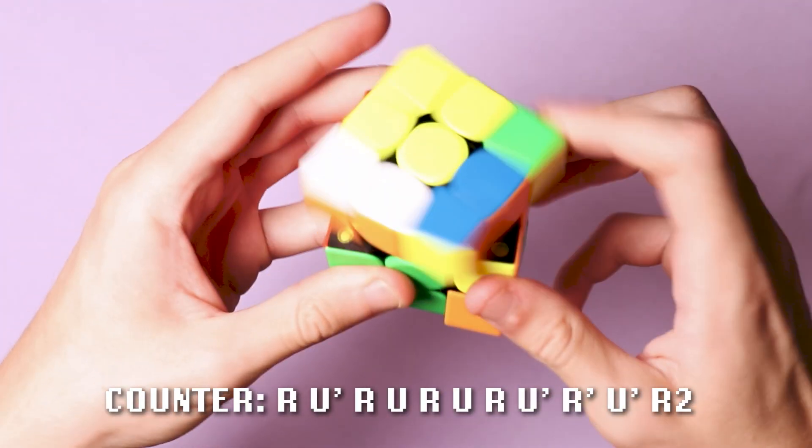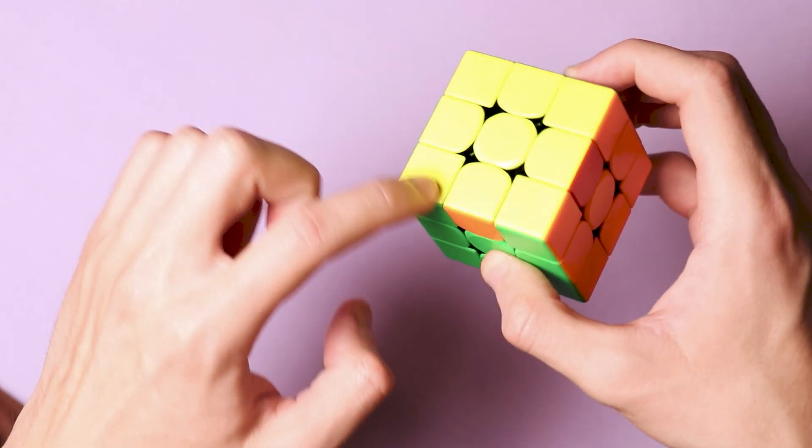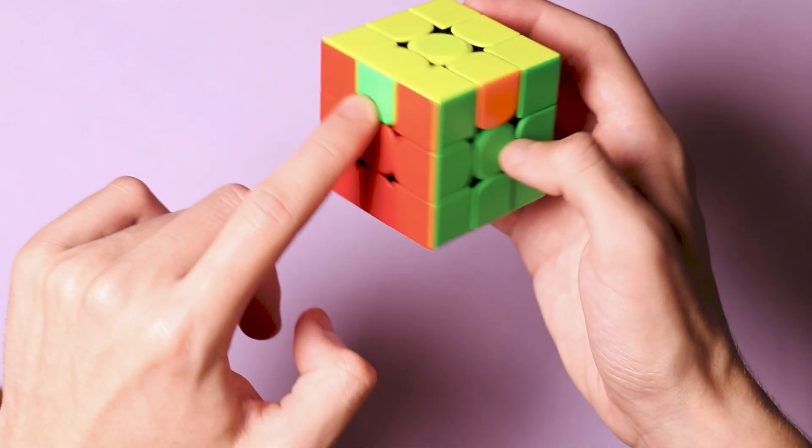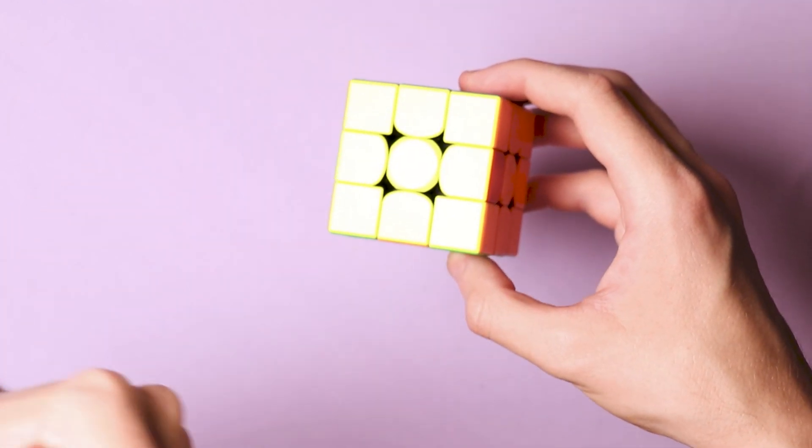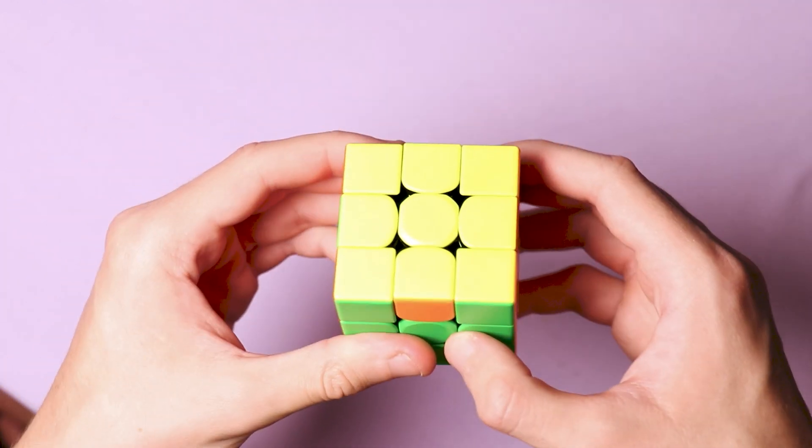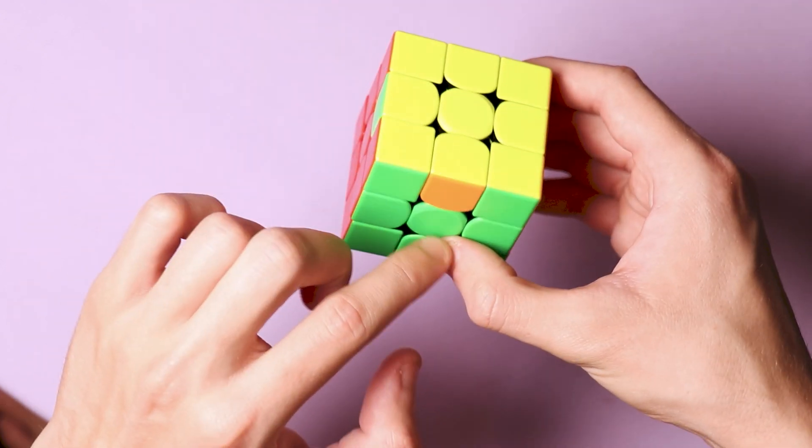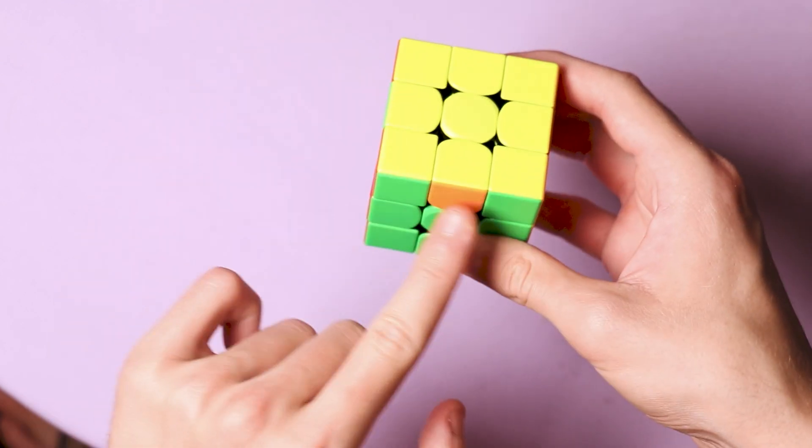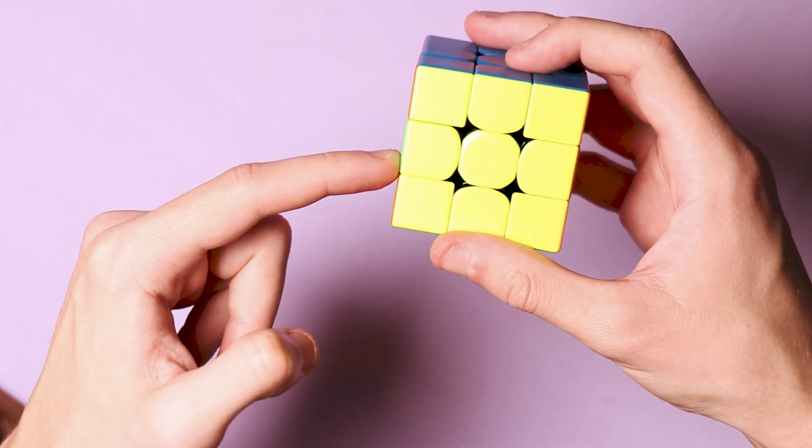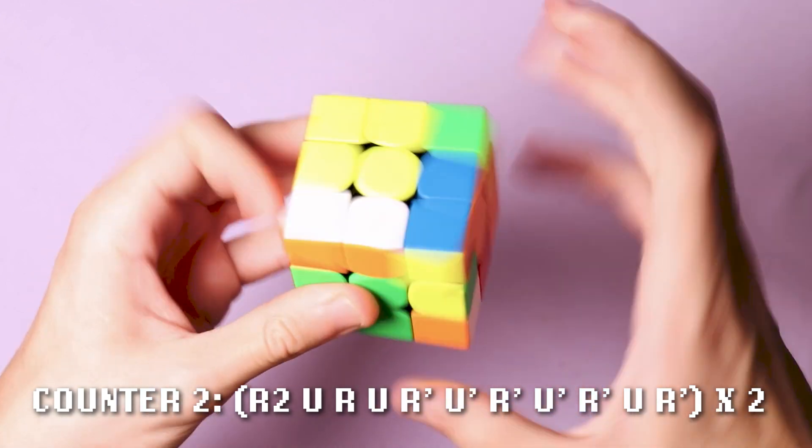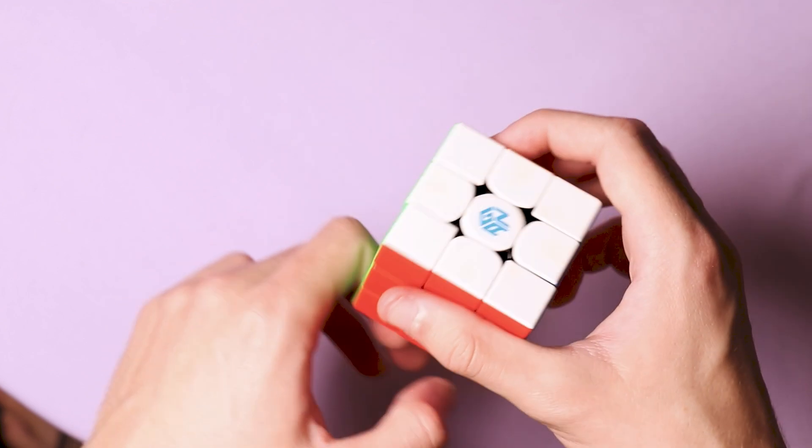The algorithm can also be reversed if you need to do it counterclockwise, but also if you see that the pieces need to be moved counterclockwise, this edge has to go here, this here, and this right here, then you can also execute the same algorithm two times. Notice that when you do it you are facing the front face, not the yellow one, but the one with the center piece that is between the edges swapped. So I'm looking from here and executing the algorithm twice, and the Rubik's cube is solved.